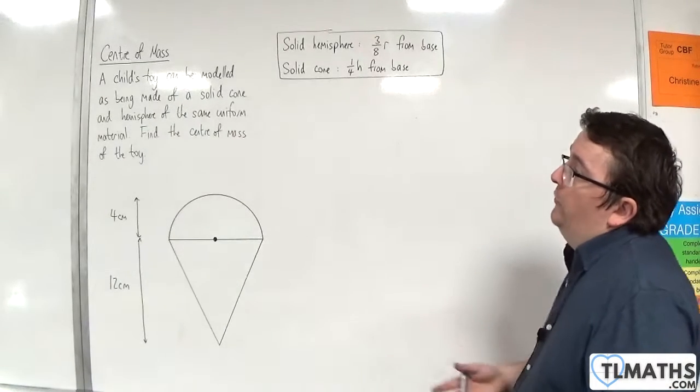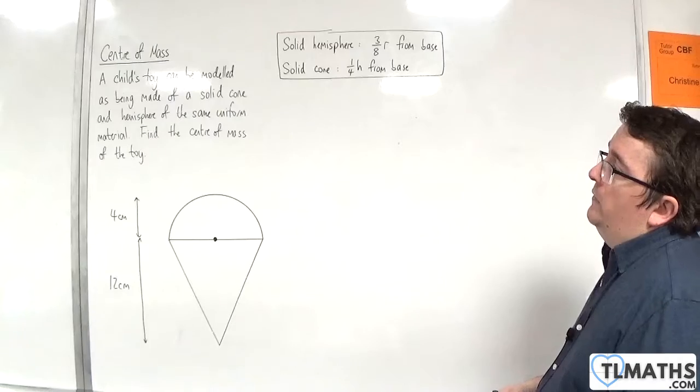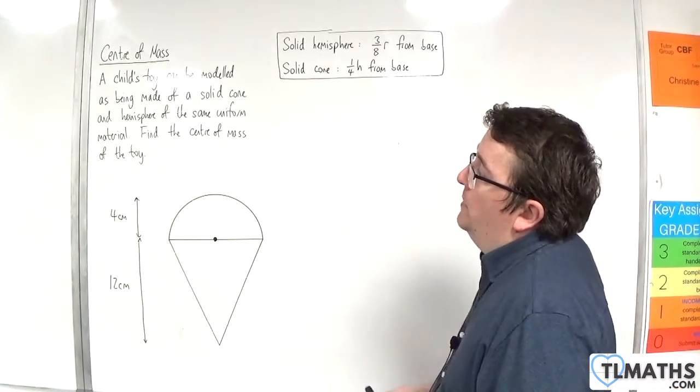So in this example, we have a child's toy can be modeled as being made of a solid cone and hemisphere of the same uniform material.